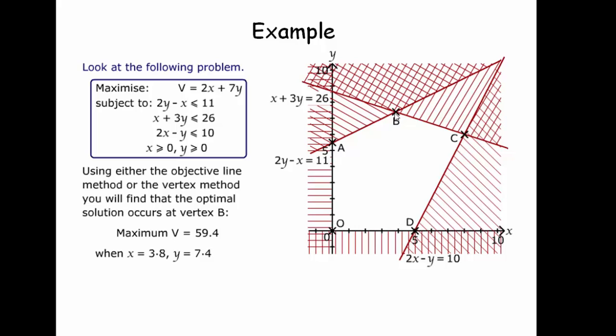D has a higher X value than B, but C has a higher X value and a higher Y value than D. So it has to be at either B or C.